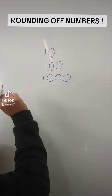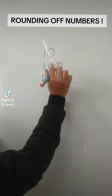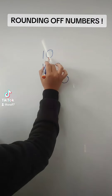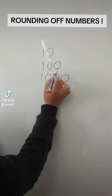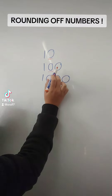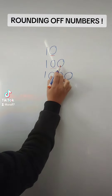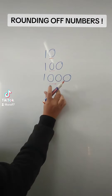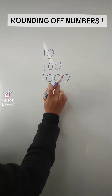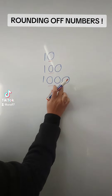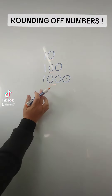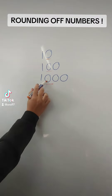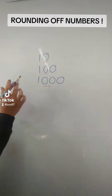Rounding off. When we round off to the nearest ten, we look at the last number. If we round off to the nearest hundred, we look at the second last number. And when we round off to the nearest thousand, we look at the third last number.